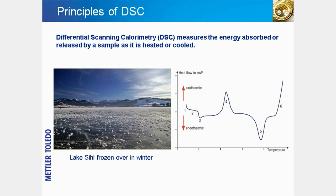In spring, when the temperature rises, the ice melts and changes from the solid to the liquid phase. The phase transition occurs as a result of energy exchange with the environment. The melting of ice to water can easily be measured by differential scanning calorimetry. The DSC measurement curve shows a peak whose area corresponds to the enthalpy involved in the process.